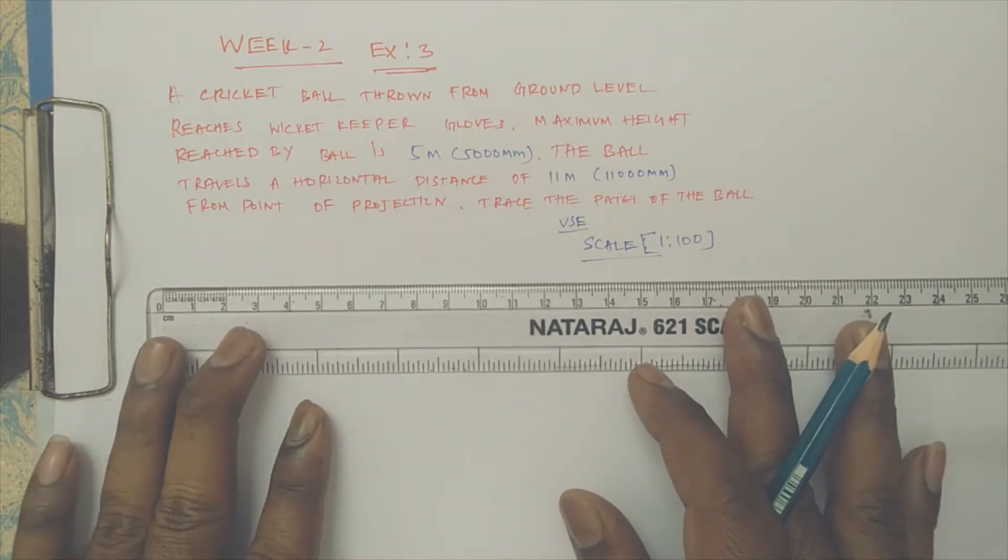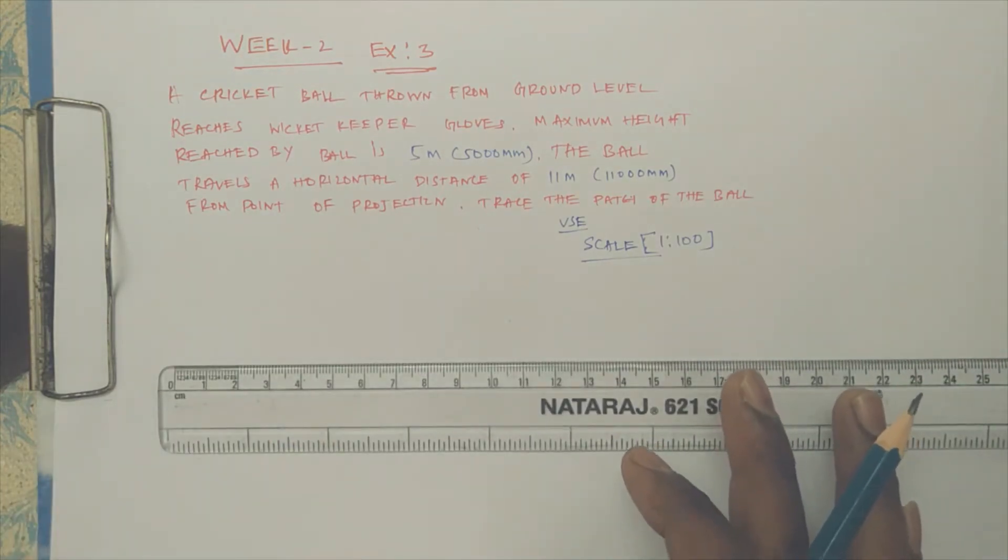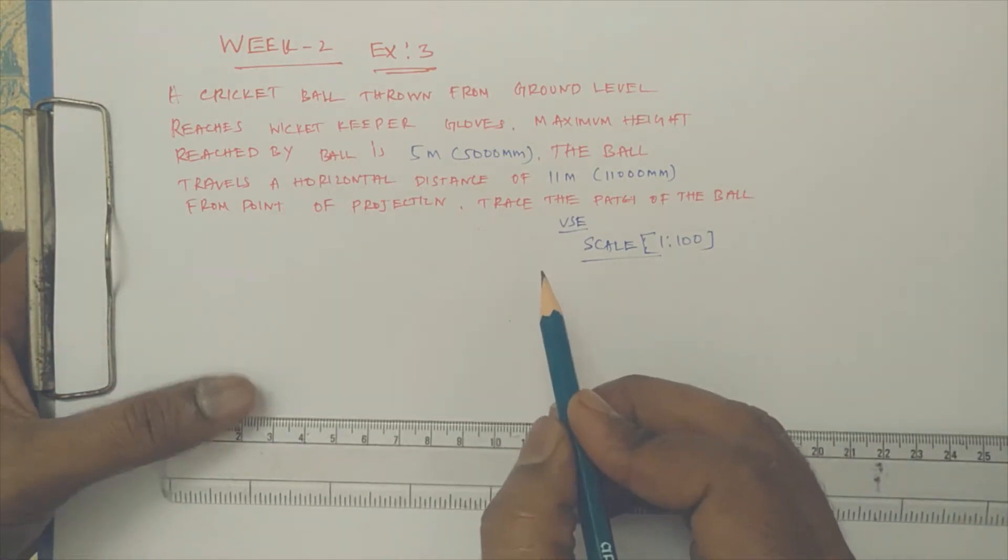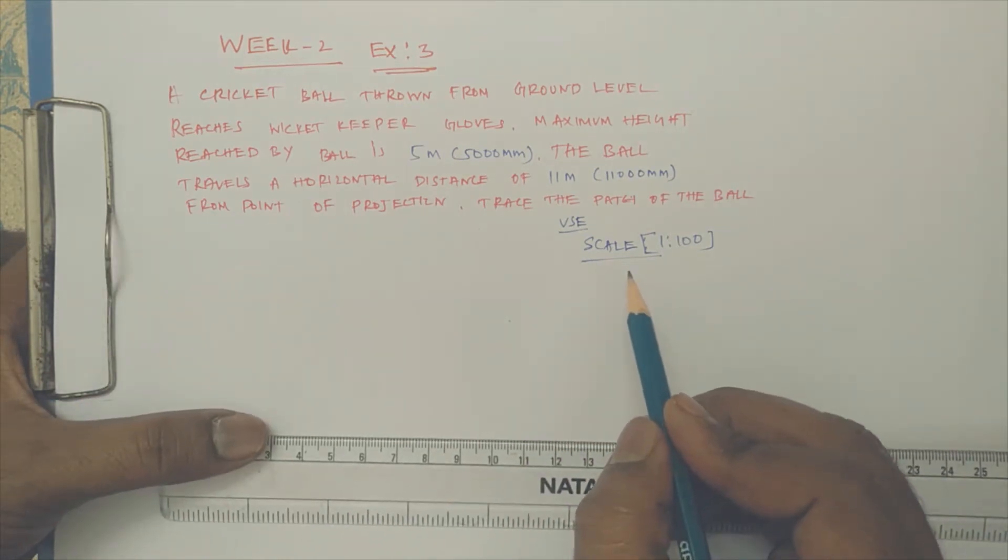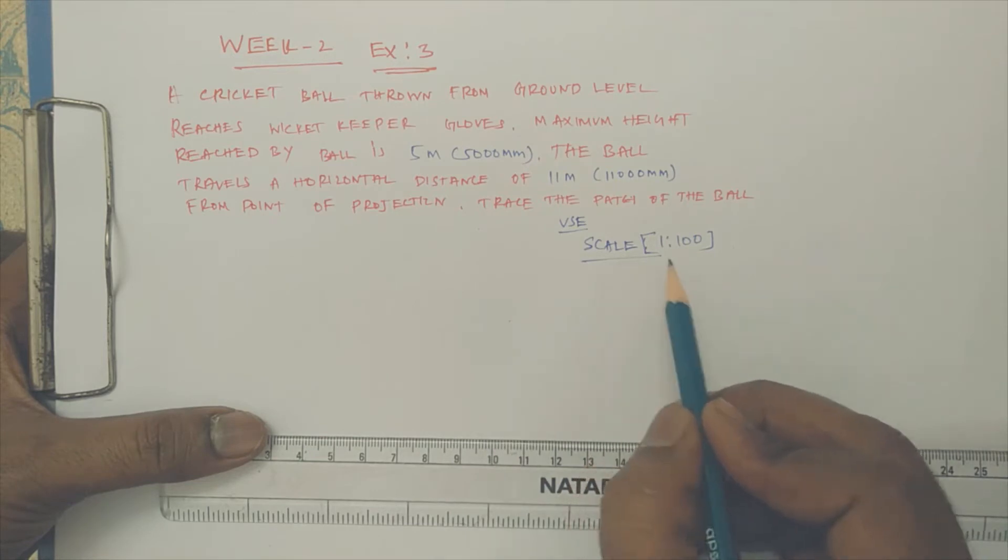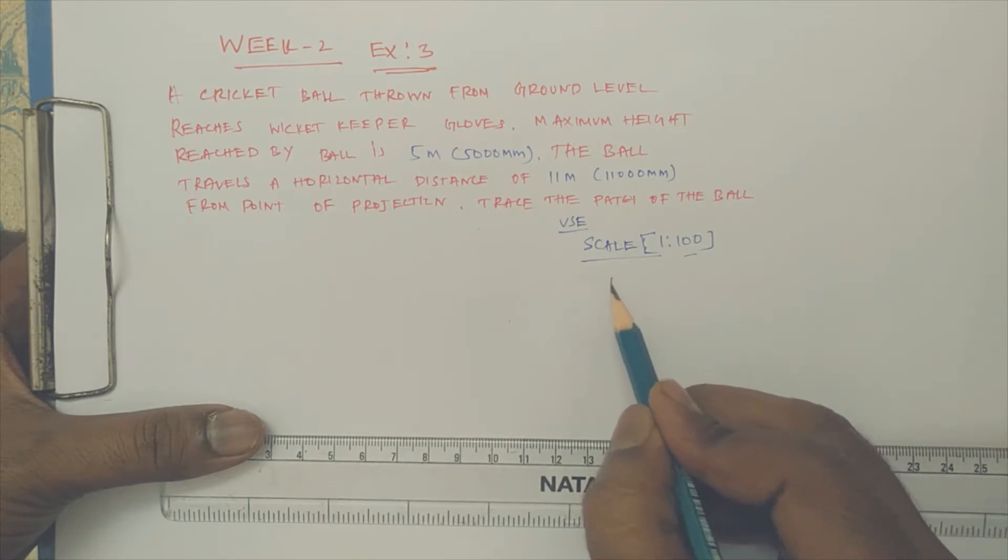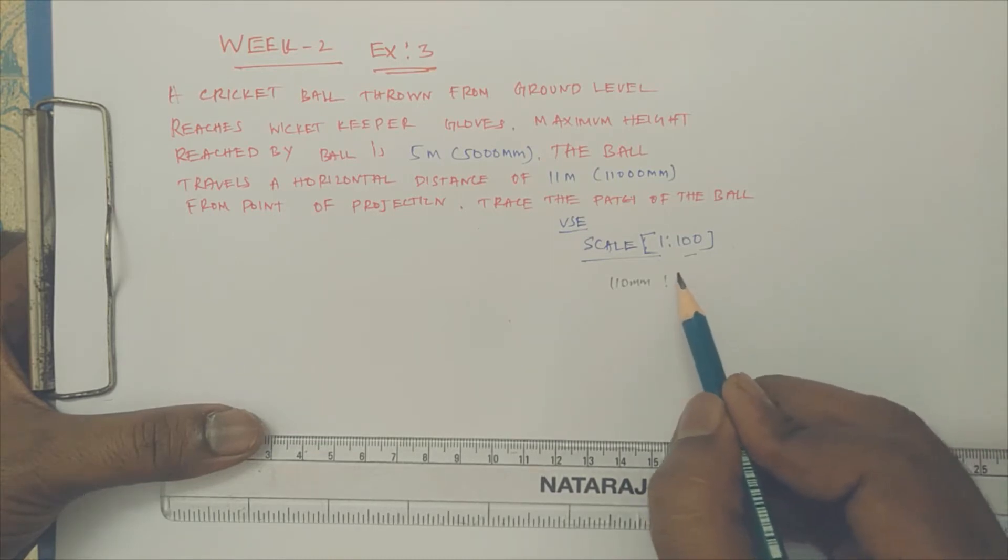So we need to draw a parabola, because whenever something is thrown it follows a parabolic shape. Now they have specified the height is 5 meters and the horizontal distance is 11 meters. I cannot directly draw 11 meters and 5 meters on an A4 sheet, so I am using a scale. For every 100 mm, I have considered 1 mm.